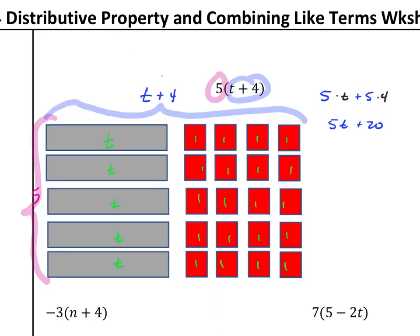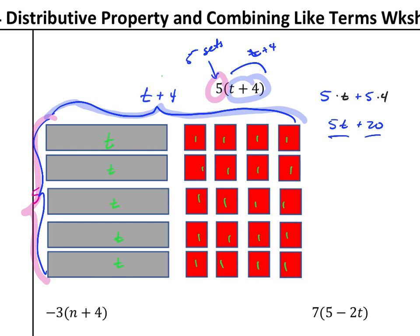Hopefully you came out with 5t plus 20. What this represents is we have five sets of t plus 4. I have t plus 4 here, and I'm going to have five sets of it. So I have one, two, three, four, five t's, and over here I have five times four, which is 20. Mama's going to kiss the babies — so five times t and five times four. Five times t is just 5t, five times four is 20.